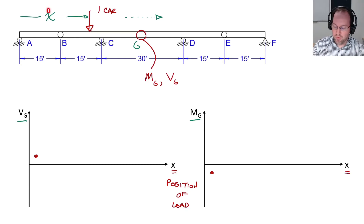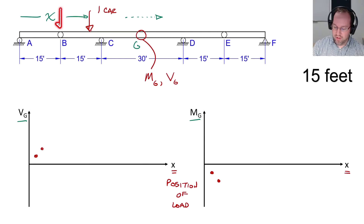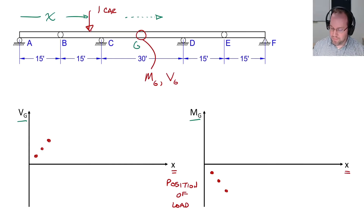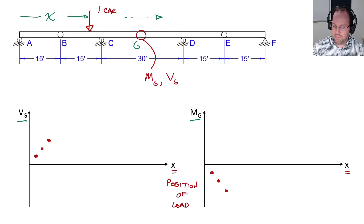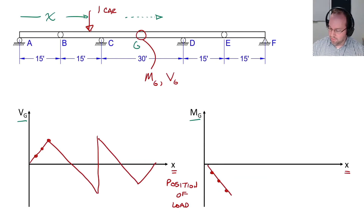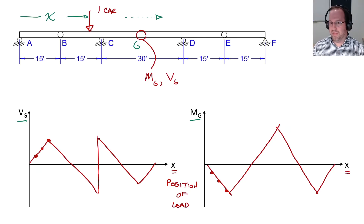Then we move our load — say to 10 feet — and I can get another shear and another moment. And then we'll move the load again, say to 11 feet, so it's directly above this hinge. I'll get another shear and another moment. And I can proceed down the structure in this way, solving a lot of structural analysis problems as this load moves across. So we'll get a lot of dots. If I connect those dots, we'll find that the diagram looks something like this for shear. And it will look like this for my moment. Now, these two diagrams look sort of like shear and moment diagrams, but they are not the same thing. These are actually known as influence lines.